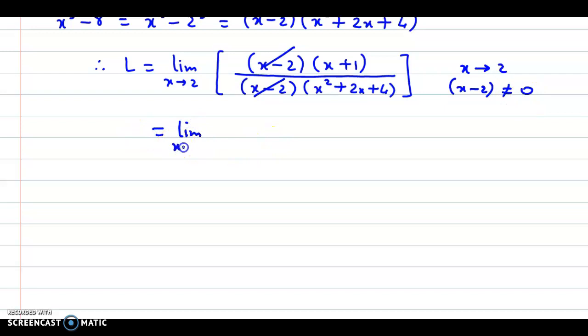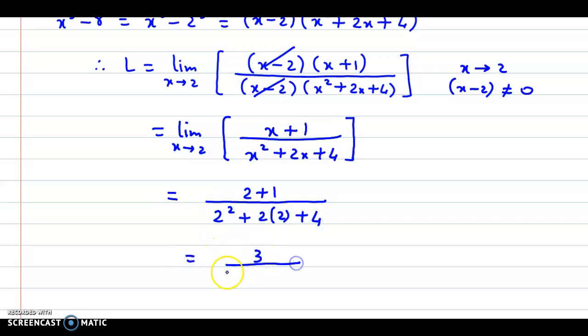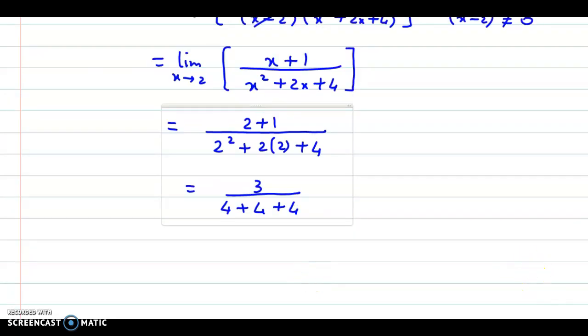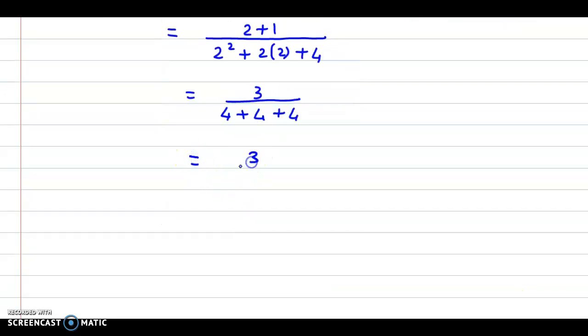We are left with the terms x plus 1 upon x squared plus 2x plus 4. And now, we simply put the limiting value of x that is 2 and we get the answer as 2 plus 1 upon 2 squared plus 2 into 2 plus 4. So we have 3 upon this is 4 plus 4 plus 4. We have 3 by 12. The final answer, that is L, is equal to 1 by 4.